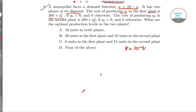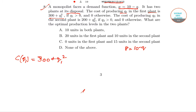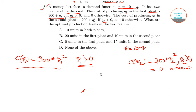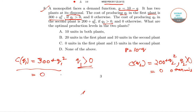The cost function for plant 1 is C(q1) equals 300 plus q1 squared when q1 is greater than 0, and 0 otherwise. For plant 2, the cost function is C(q2) equals 200 plus q2 squared when q2 is greater than 0, and 0 otherwise.